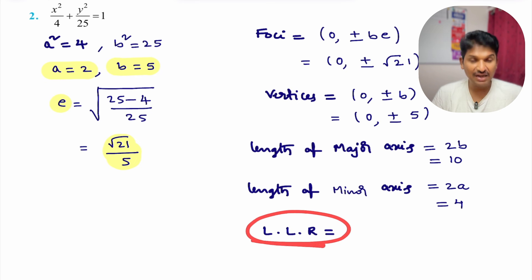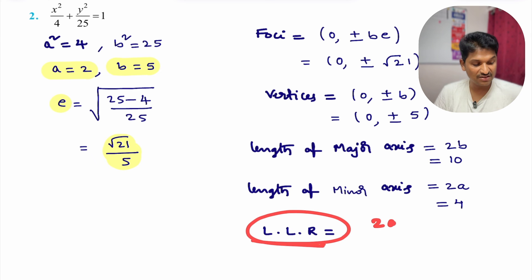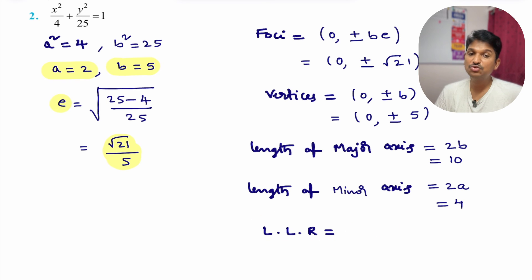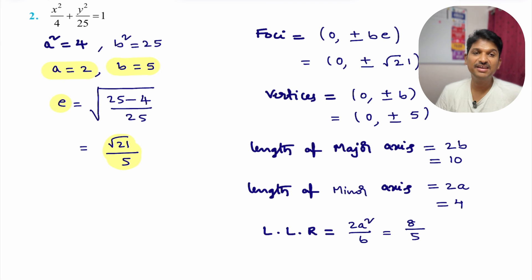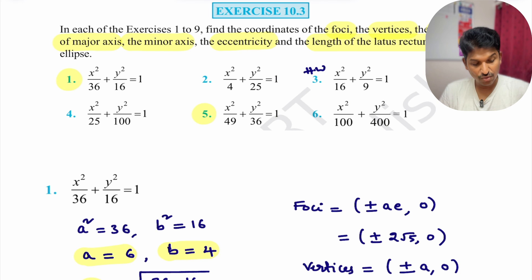Length of latus rectum for 2nd type of ellipse = 2a²/b. a² = 4, so 2×4 = 8, divided by b = 5. So length of latus rectum is 8/5. We have now completed question 2.